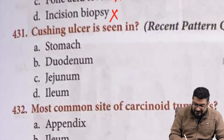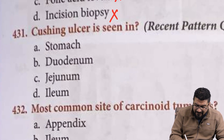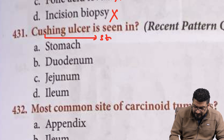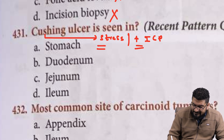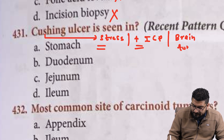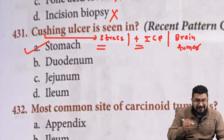Cushing ulcers are seen in the stomach due to stress — Cushing has an 'S' due to stress — raised ICP, brain tumour, or head trauma. So these ulcers will be seen in the stomach.